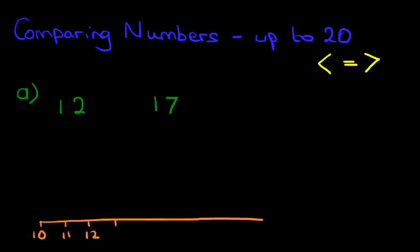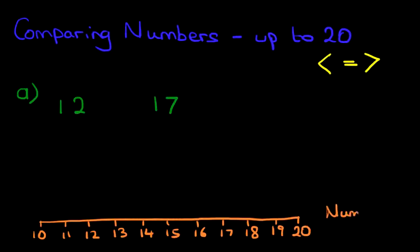So let's write down all the numbers between 10 and 20 in order. So we've got 14, 15, 16, 17, 18, 19, and 20. So that is our number line from 10 to 20.